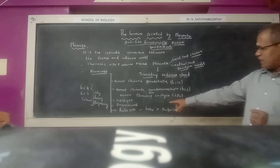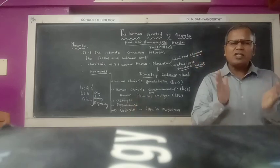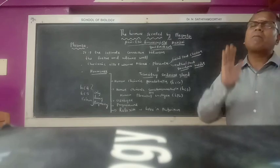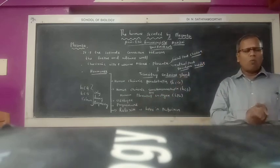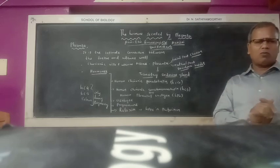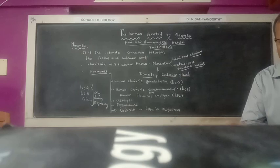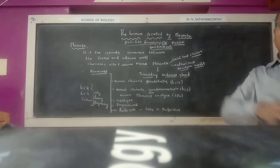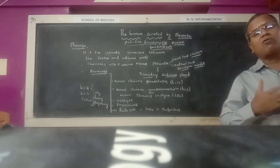Progesterone is the predominant ovarian hormone of the pregnancy phase. It is responsible for the thickening of endometrium, development of endometrial glands, receives the fertilized egg for implantation, prevents the contraction of uterus, and blocks the secretion of FSH.